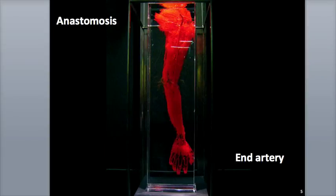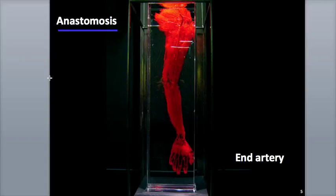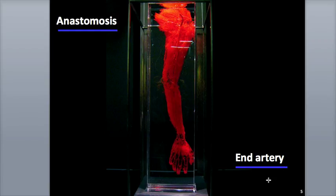As arteries branch throughout the body, multiple arteries are responsible for delivering blood to the tissues. An anastomosis is a joining together of two or more arteries delivering blood to the same area, providing side routes called collateral circulation for blood to reach an organ if flow is blocked. Not all arteries form anastomoses — some end directly at an organ without branching. These are called end arteries, and if blood flow is blocked in one, the part of the organ it supplies is at risk of dying through necrosis.